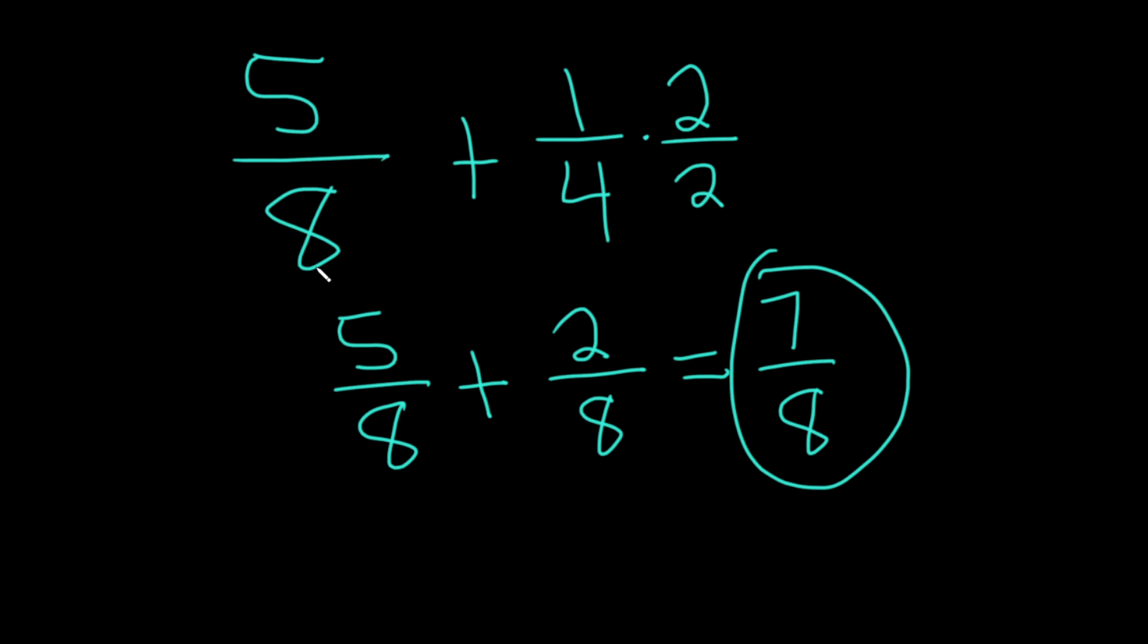And just to check our work, 5 over 8 plus 1 over 4. Multiply by 2 over 2. 2 times 1 is 2. 2 times 4 is 8. 5 plus 2 is 7. So we end up with 7 over 8.